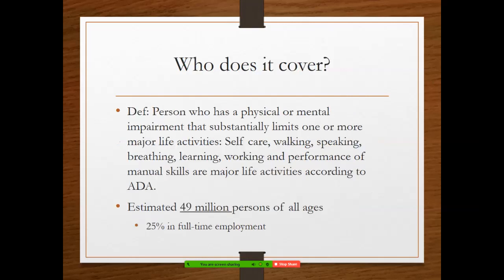Who does the ADA cover? Any person who has a physical or mental impairment that substantially limits one or more major life activities. Self-care, walking, speaking, breathing, learning, working, and performance of manual skills are major life activities according to the ADA. And as OT professionals, we would agree with that.